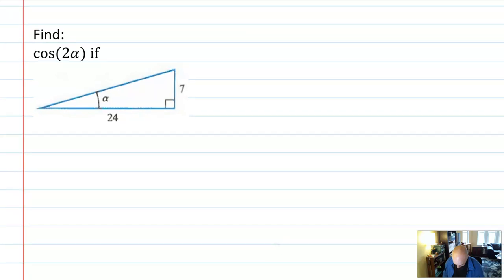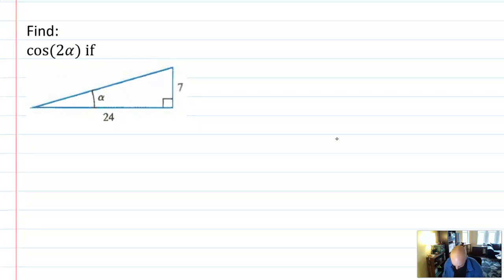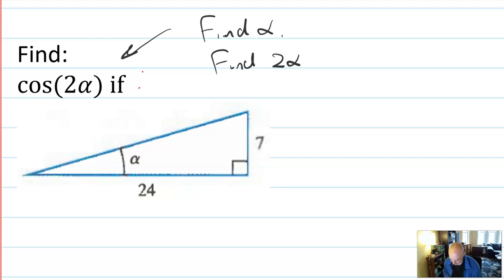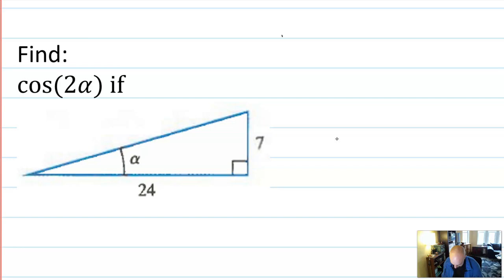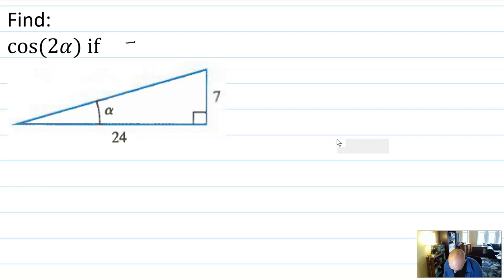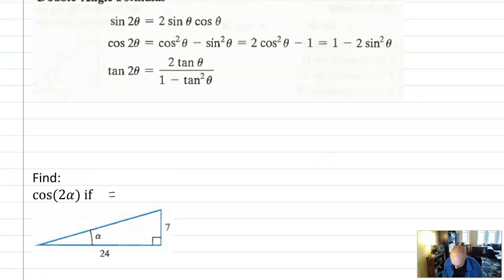So this question says: find cosine of two times alpha if alpha is equal to the angle in this triangle. What it does not say is find alpha or even find two alpha — those are not things we're actually going to do. We are just going to work with the triangle itself. I know that cosine of two alpha has an identity.